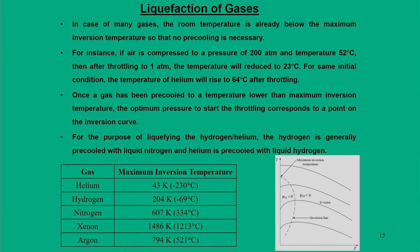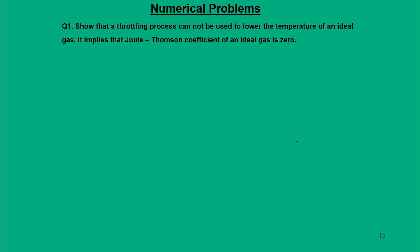This shows how different gases behave when starting from a given initial state. For many gases, room temperature is already below the maximum inversion temperature, so no pre-cooling is necessary. Hydrogen is generally pre-cooled with liquid nitrogen to achieve its initial state, and helium is normally pre-cooled with liquid hydrogen. There is a challenge in how to store hydrogen and helium in liquid form.